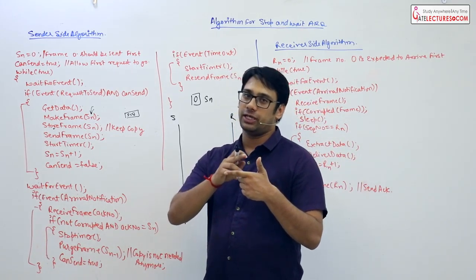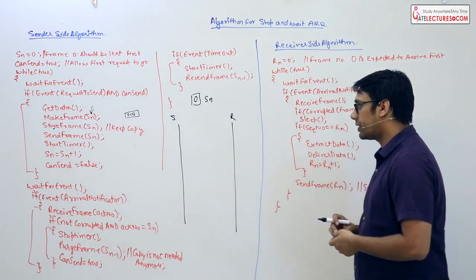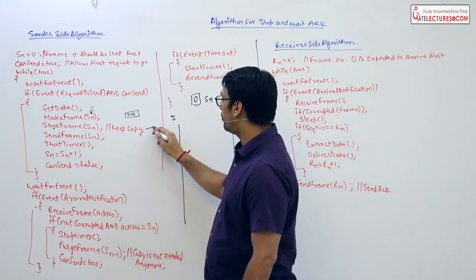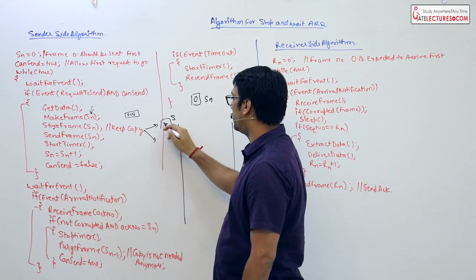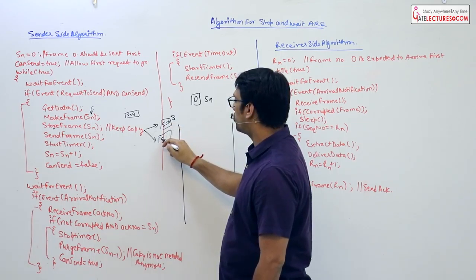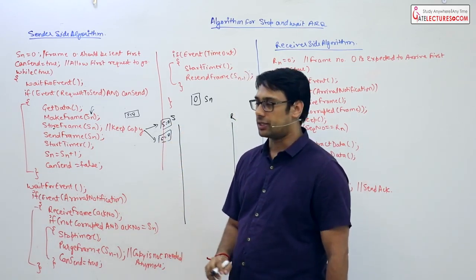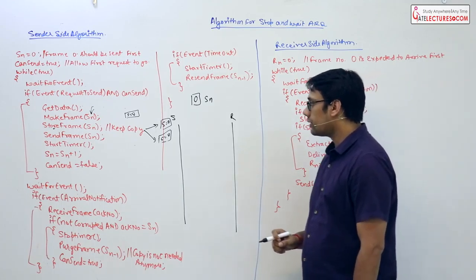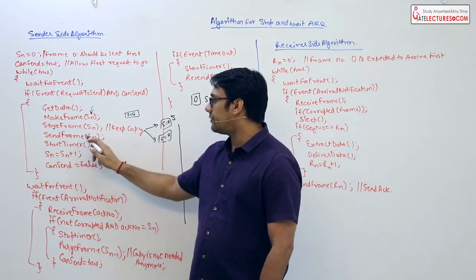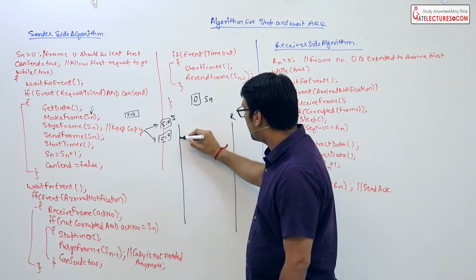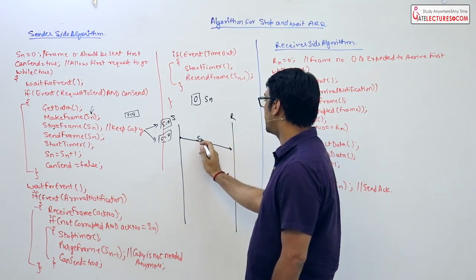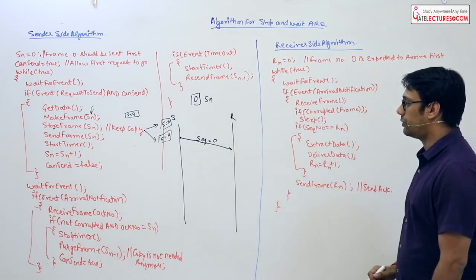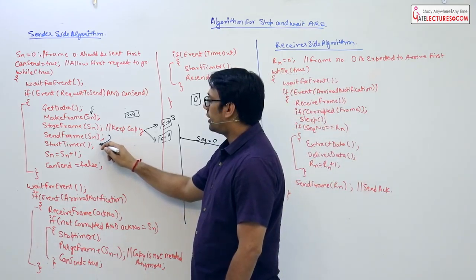We need some storage on the sender side to store that particular data packet, because we may need to retransmit it. We make two copies of the data packet — one copy we send, and the second copy we save on our system. We then send the frame with SN to the receiver; for the very first frame the sequence number is zero.